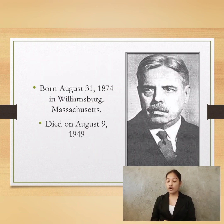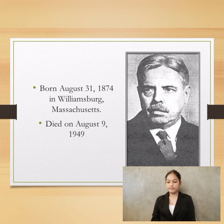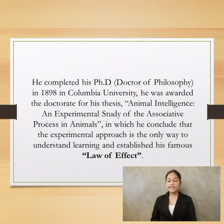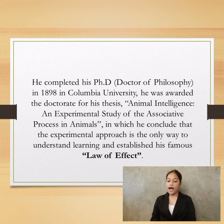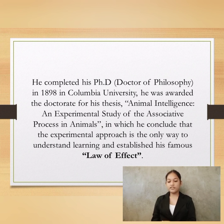He was born on August 31, 1874 in Williamsburg, Massachusetts, and died on August 9, 1949. He completed his doctorate of psychology in 1898 at Columbia University. He was awarded the doctorate for his thesis, Animal Intelligence, an experimental study of the associative process in animals, in which he concluded that the experimental approach is the only way to understand learning, and established his famous law of effect.